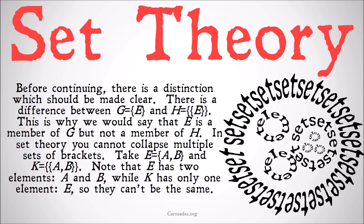Take e equals the set {a, b} and k equals the set {{a, b}}. Note that e has two elements, a and b, while k only has one element, which is e, because e is identical to the set of a and b.